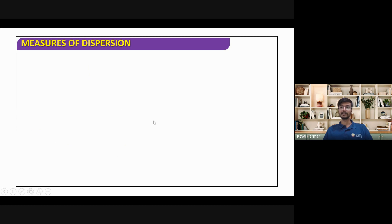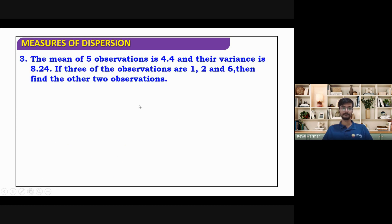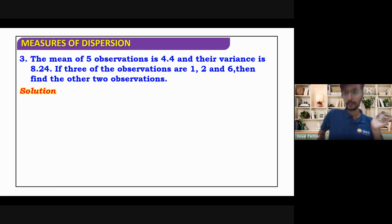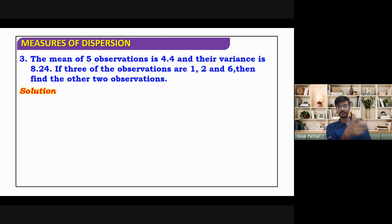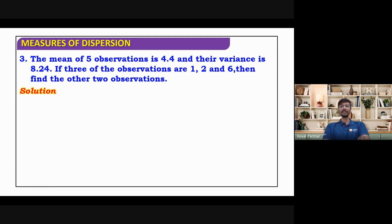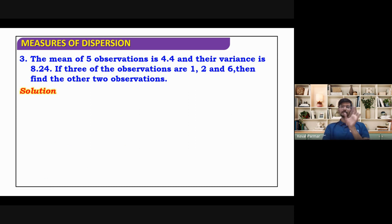The chapter is almost over. We just need to do one question on coefficient of variation. Don't worry about calculative questions in JEE Mains — the questions there will be purely concept-based. No need to form any table. This theoretical calculation was for the 11th standard exam which will happen in just a month.